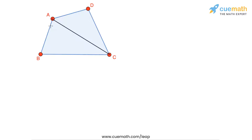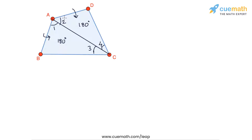Let's draw diagonal AC. We see that this diagonal splits the angles at A and C into two parts each. So we have angle 1 and angle 2 at vertex A, and angle 3 and angle 4 at vertex C. If we separately apply the angle sum property to triangle ABC and triangle ADC, we find that the sum of angles in each triangle is 180 degrees.